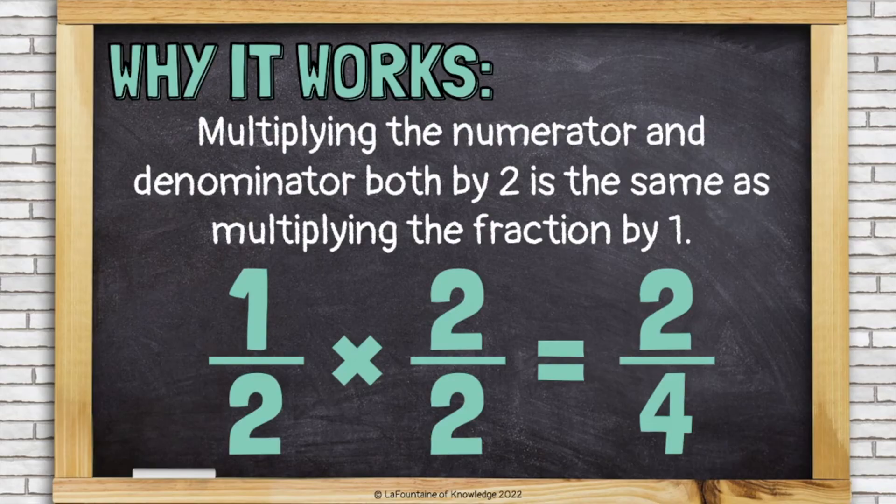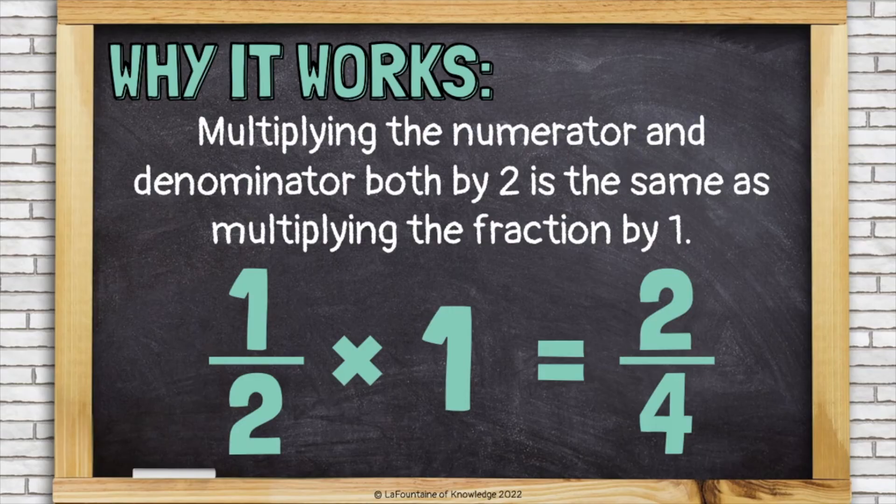But remember, two over two, or two halves is just one. We really just multiplied by one, and that is why the value stays the same.